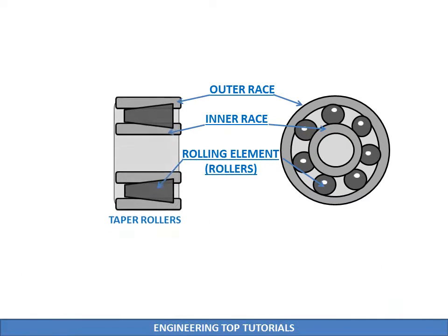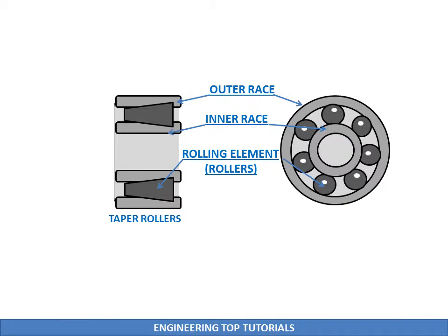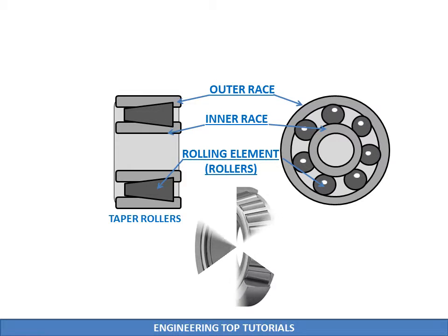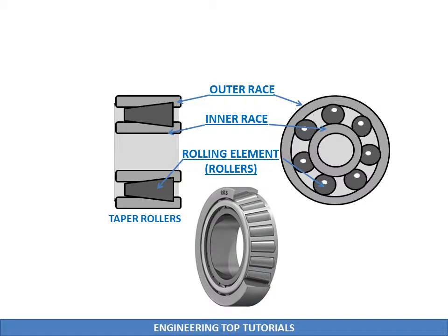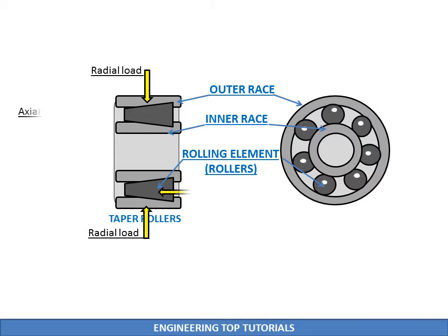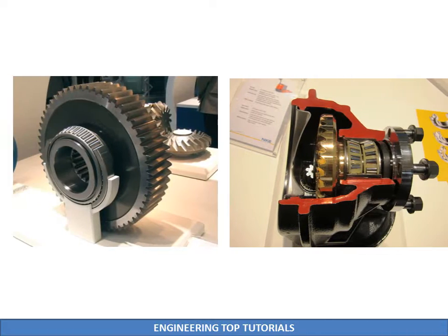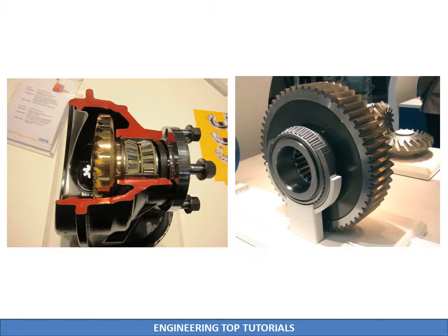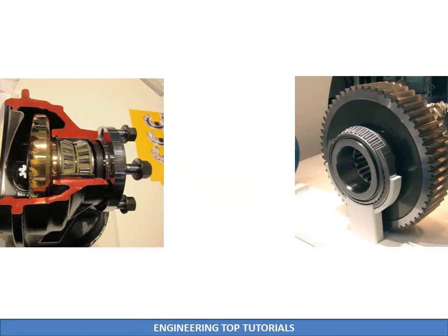Tapered roller bearings use conical rollers that run on conical races. Both the inner and outer raceways are segments of cones and the rollers are also made with a taper. This helps them to support both radial and axial loads. Because of the conical geometry of tapered roller bearings, which provides a larger contact patch, they are able to carry greater loads compared to spherical or ball bearings. Tapered roller bearings are used in the wheel bearings of mostly trucks, buses, cars, and so on. Due to manufacturing complexities, tapered roller bearings are generally more expensive than ball bearings.